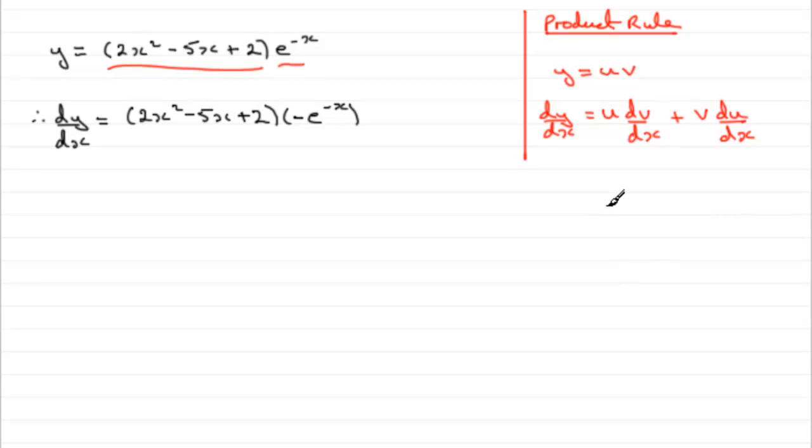That result being that if you have y equals e to the ax, by the chain rule, dy by dx equals a times e to the ax. So that's a rule that you should be familiar with.